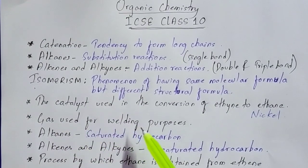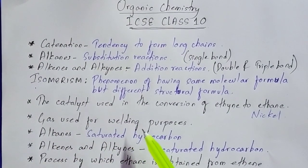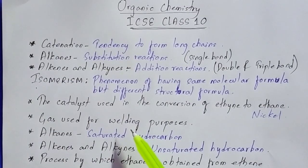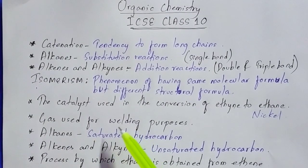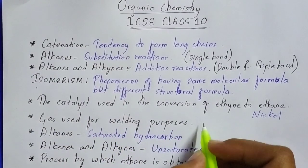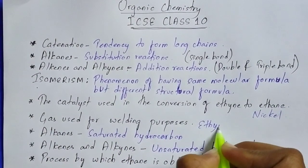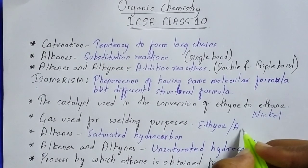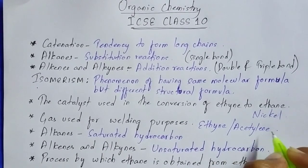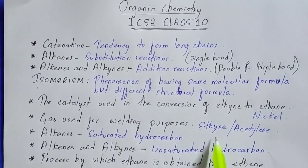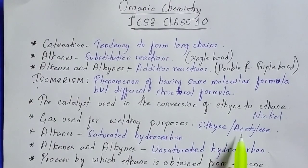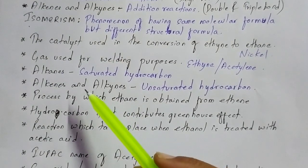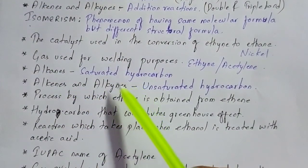The next important question - repeated many times in past 10 years board papers - is: name the gas that is used for welding purposes. The gas used for welding purposes is ethine. This is the IUPAC name, and the common name of ethine is acetylene. So do not get confused if you are given the common name acetylene instead of ethine.